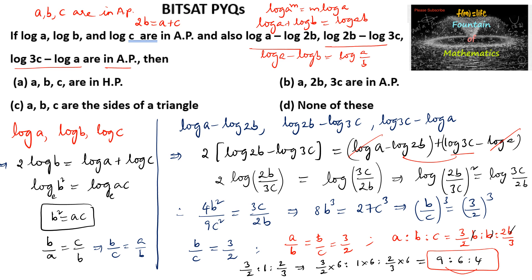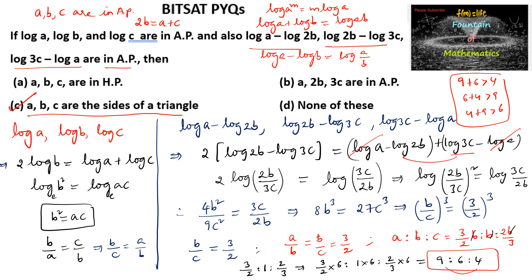Also, considering the option that A, B, C are the sides of a triangle: 9, 6, and 4 can be the sides of a triangle, because the sum of any two sides is always greater than the third side. 9 plus 6 is greater than 4, 6 plus 4 is greater than 9, and 4 plus 9 is greater than 6. So the triangle inequality is satisfied, meaning A, B, C can be the sides of a triangle.